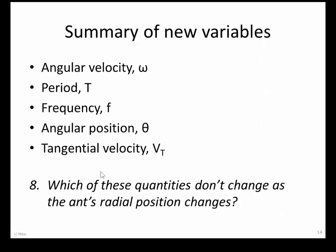Question 8 asks which quantities don't change as the ant's radial position changes — that is, moving from ant A to B to C along the fan blade. The answer is the first four variables — period, frequency, angular velocity, and rotational speed — don't change with radius. Only tangential velocity changes.